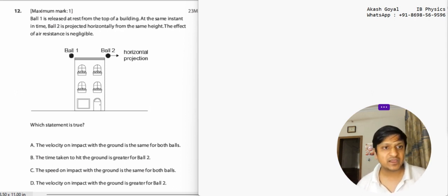First, understand the question. Ball 1 on the left side of the building has been released from rest, meaning u is 0, the initial velocity. Ball 2 is projected horizontally, so if ball 2 has an initial velocity in a horizontal manner, this statement is true.